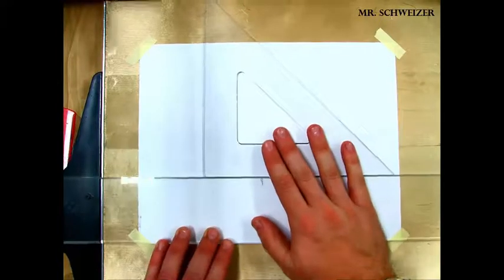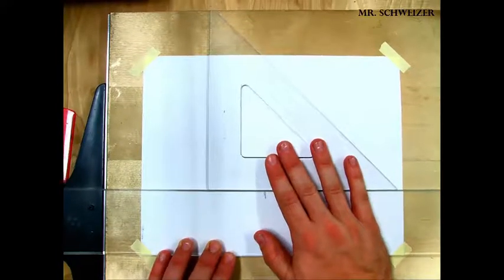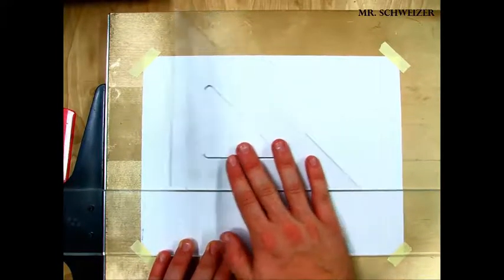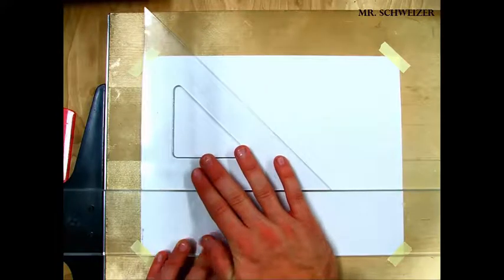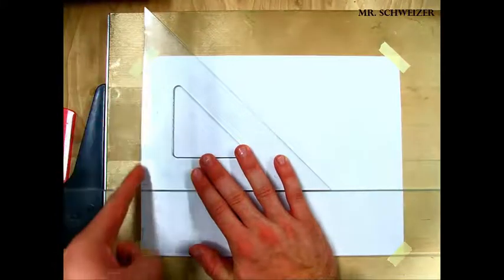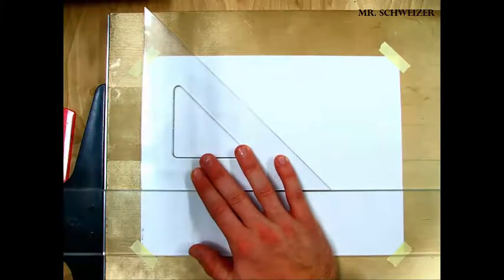So another way to check this is with your triangle. You want to seat it on your T-square and then you're gonna slide it over and check your vertical lines to make sure it lines exactly up with that ninety-degree angle.